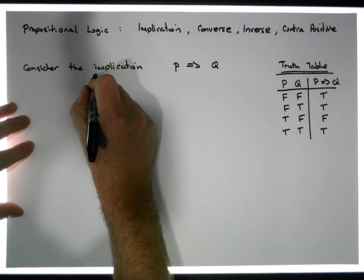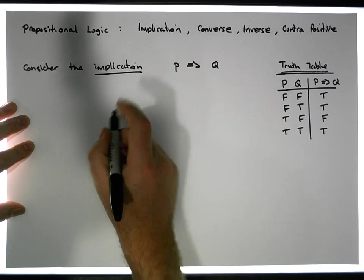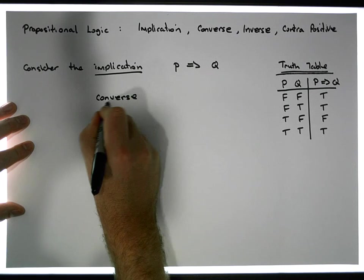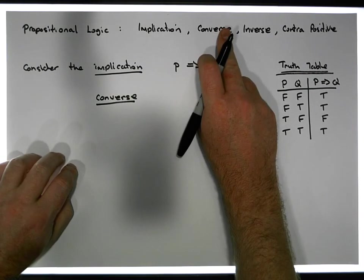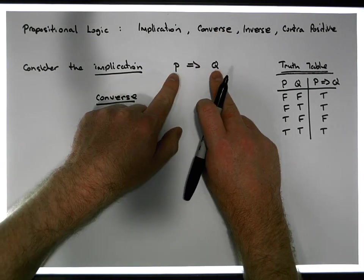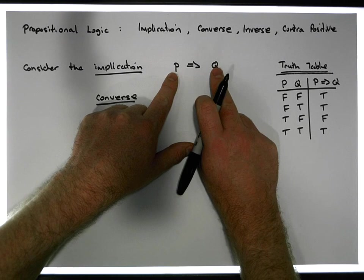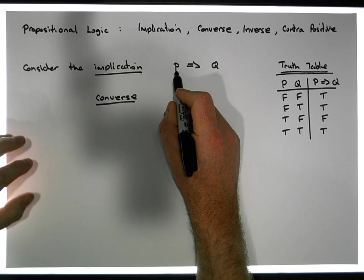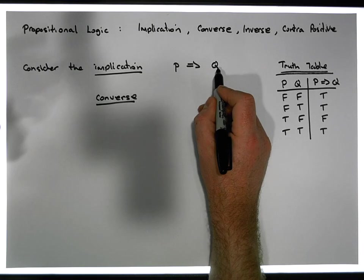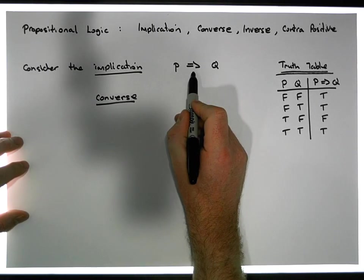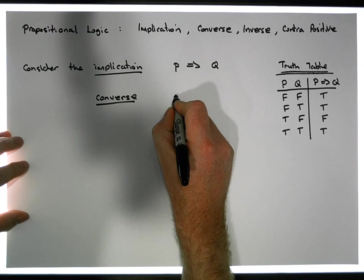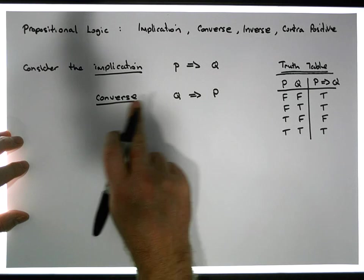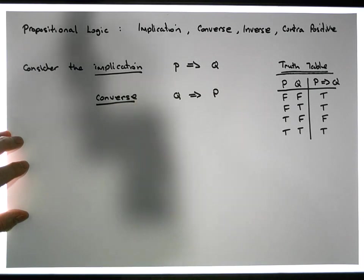The first thing we're going to define with respect to the original implication is what's known as the converse. The converse of an implication is where we flip the premise with the conclusion. So if P represents some proposition and Q represents some other proposition, connected through an implication, then if we flip the propositions around — Q implies P — this is what's known as the converse of the original argument.